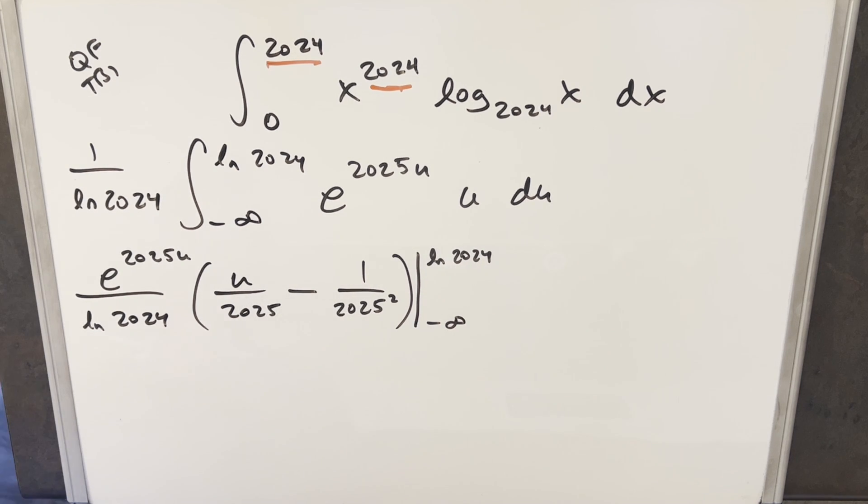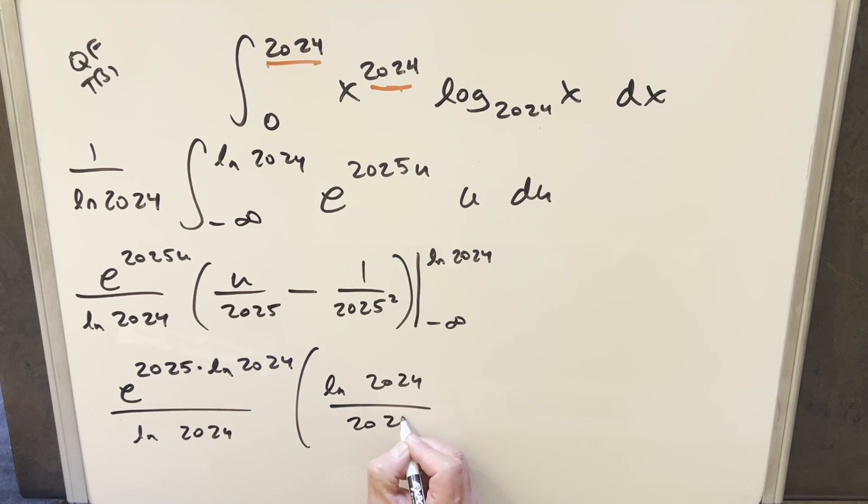So evaluating first at natural log 2024, we're going to have to plug in there. This is a little bit awkward. So this is going to become e to the 2025 times natural log 2024. We still have all this here. And then plugging in again, this is going to become ln 2024 over 2025 minus 1 over 2025 squared.